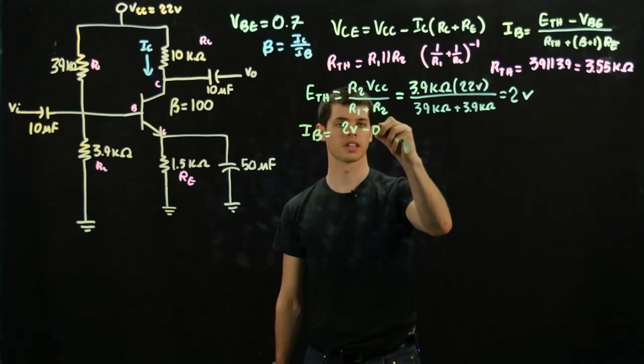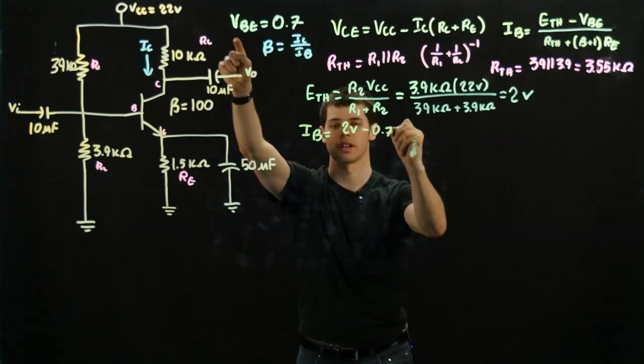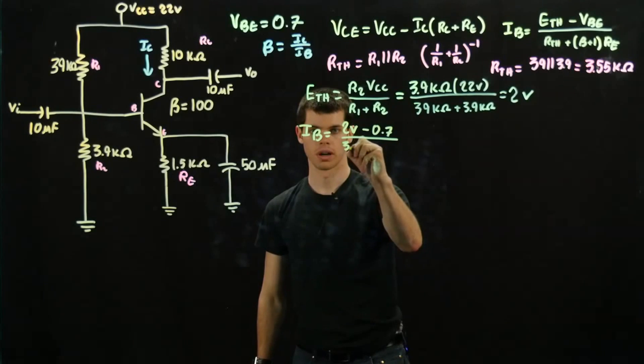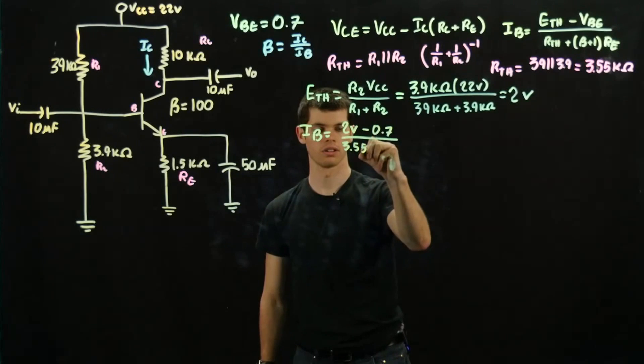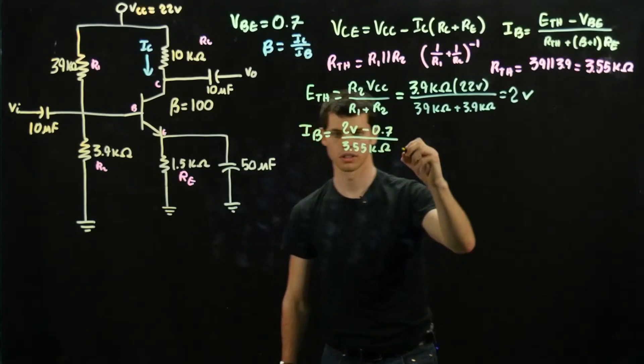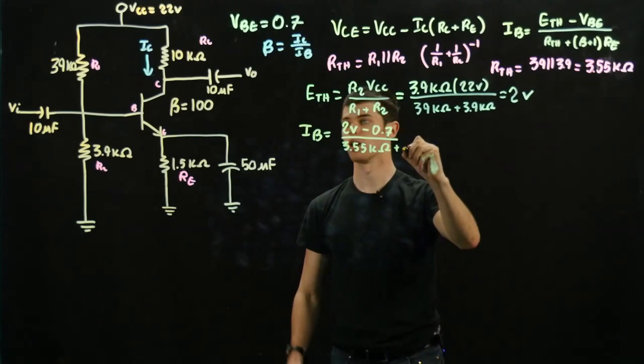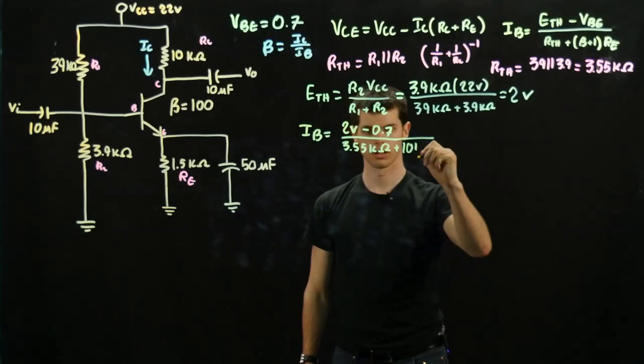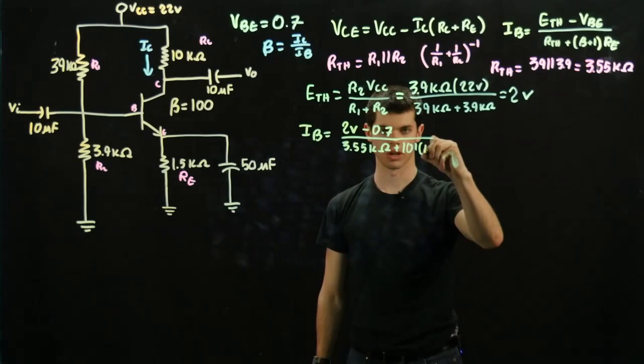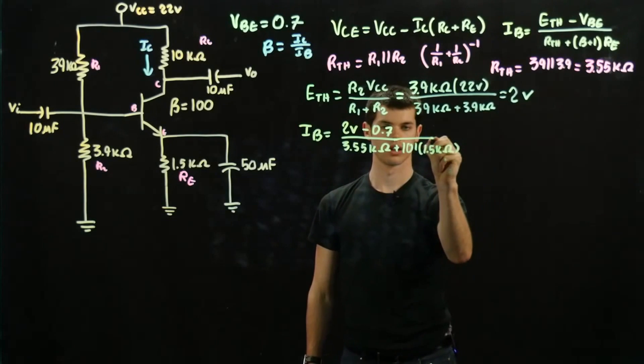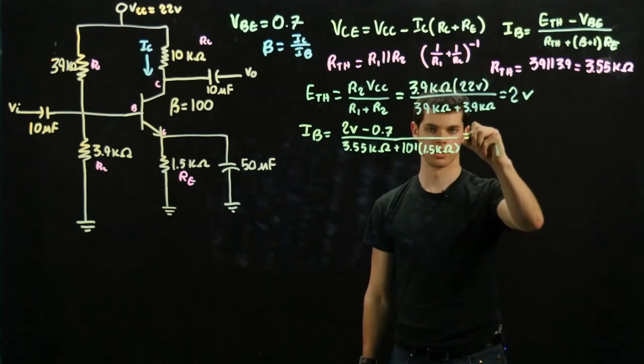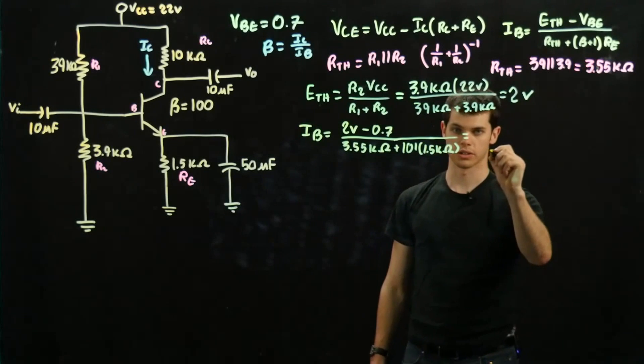minus 0.7 because VBE is equal to 0.7 as we stated earlier. And we're going to be dividing that by 3.55 kilo-ohms plus 101 because our beta value is 100, times 1.5 kilo-ohms. Alright, now when we solve that out, it's going to be an order of magnitude significantly smaller.